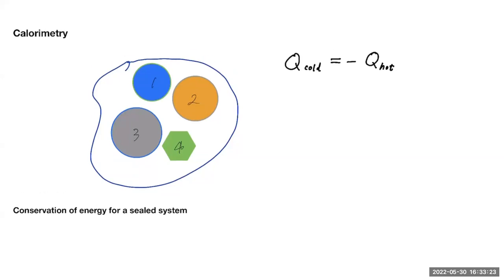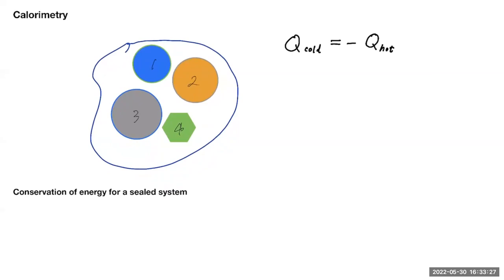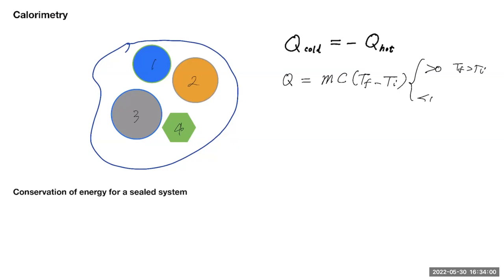How much heat is released by the hot substance? We know Q equals the mass of the substance times specific heat times the temperature change, T_final minus T_initial. This is positive if T_final is greater than T_initial — meaning it's a colder substance absorbing heat — and negative if T_final is less than T_initial, when the hot substance gives up heat. Q can be positive and negative, but when you attach a negative sign to the heat released, it becomes positive again.